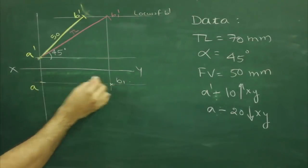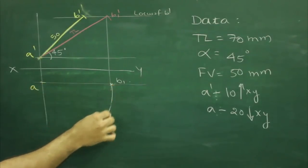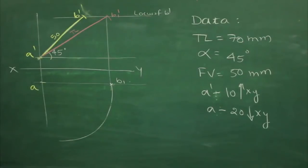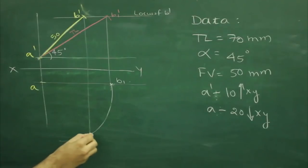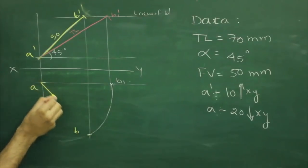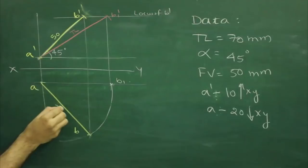We take A to B1, keeping point A fixed, we will rotate and then we will project from B dash straight down. So wherever it will cut, that point would be B. So that is top view.